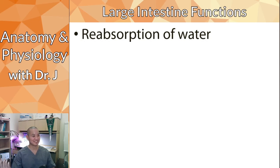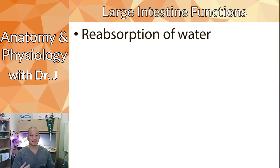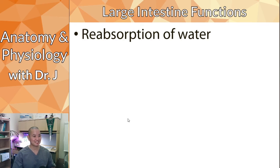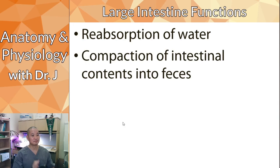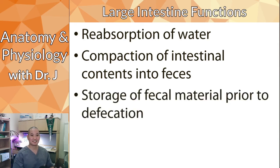So what does the large intestine do? It reabsorbs water. You're dumping a lot of water into your GI tract from saliva and gastric acid, and if you didn't reabsorb it, you'd lose water and everything would come out watery — that's essentially diarrhea. So you want to compact your intestinal contents into solid feces. Diarrhea is when that doesn't happen and it comes out still liquidy.